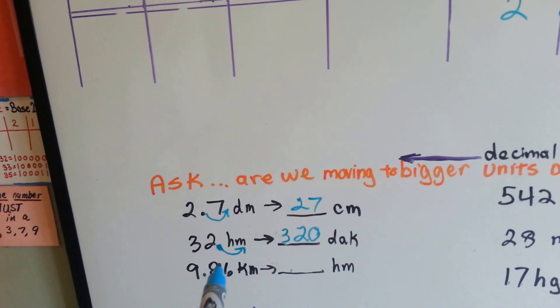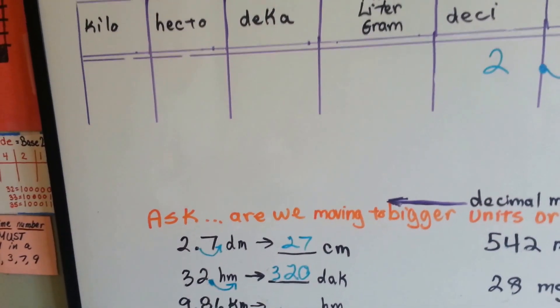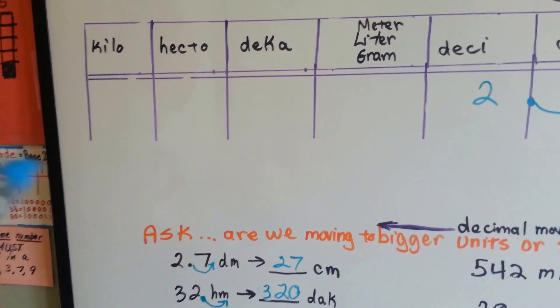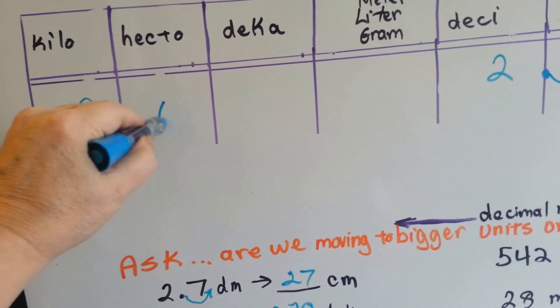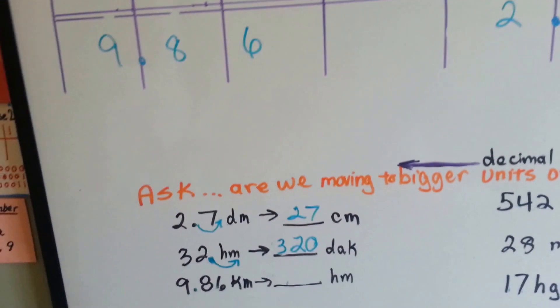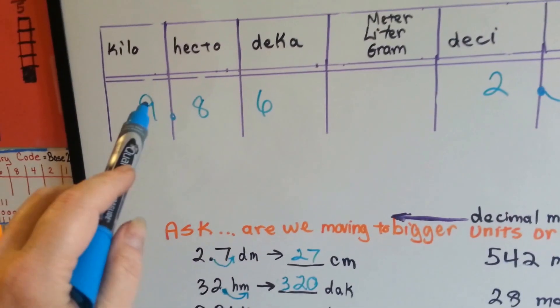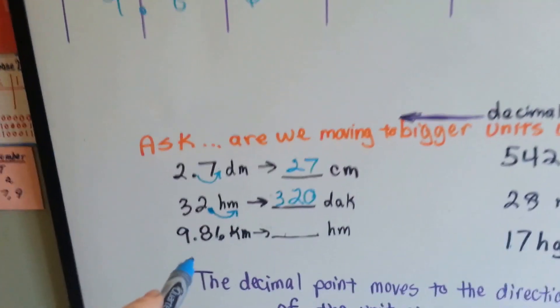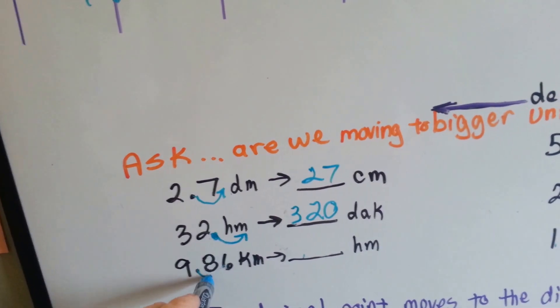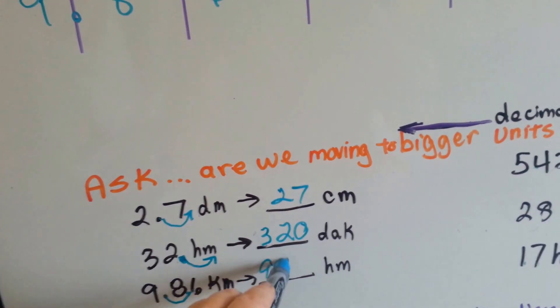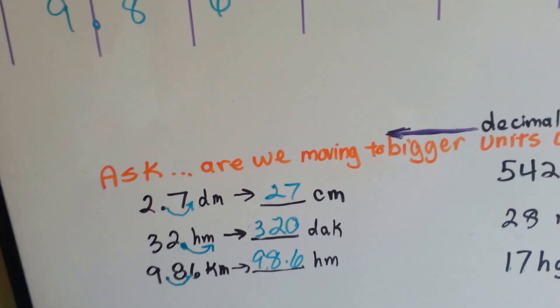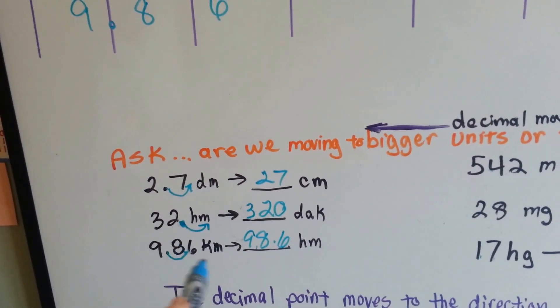How about 9.86 kilometers? If we had 9.86 kilometers, we'd be moving to hectometers. We're moving smaller. So because we're moving smaller, the decimal point goes here. It becomes 98.6. It moved over one because we went to a smaller unit.